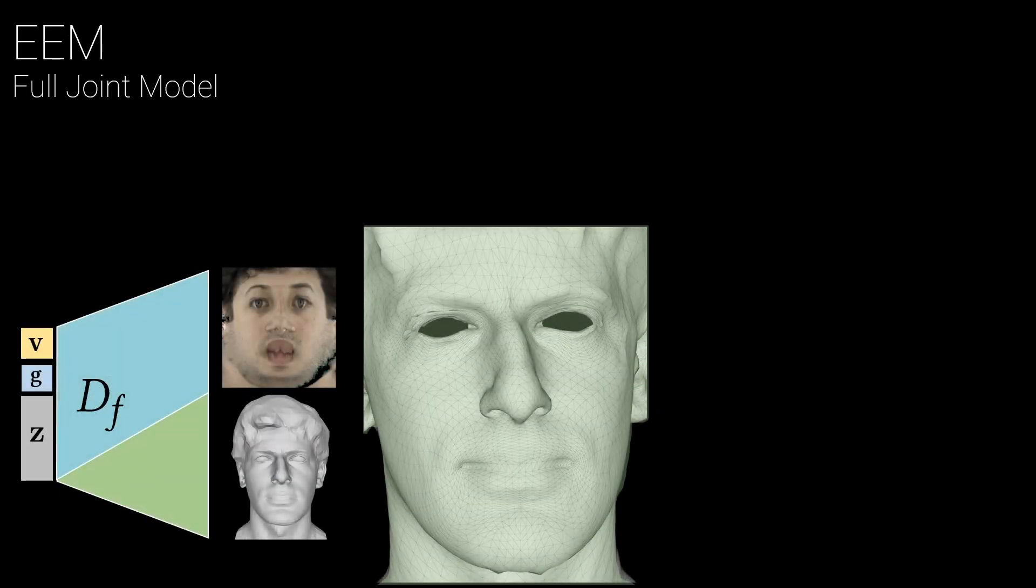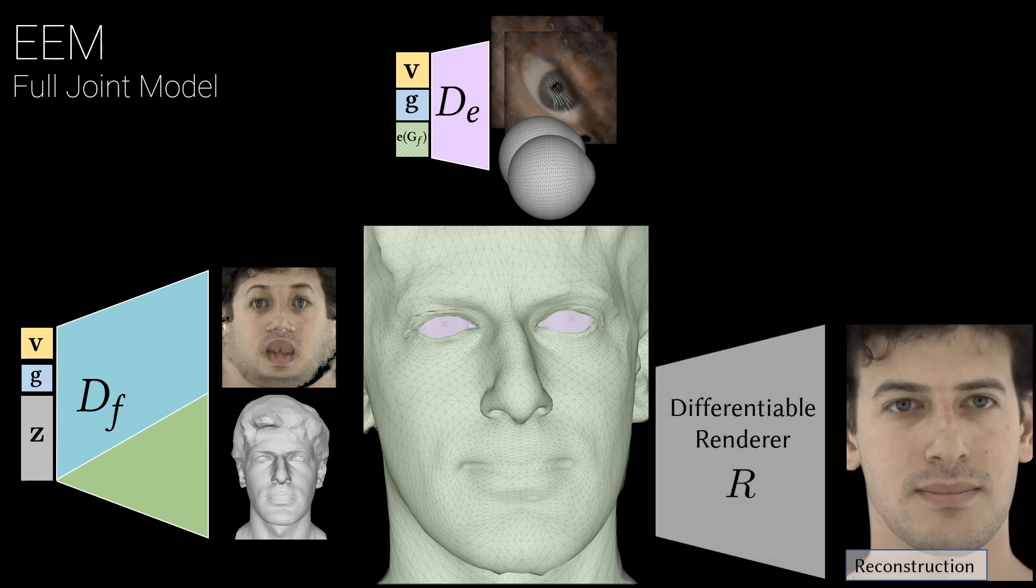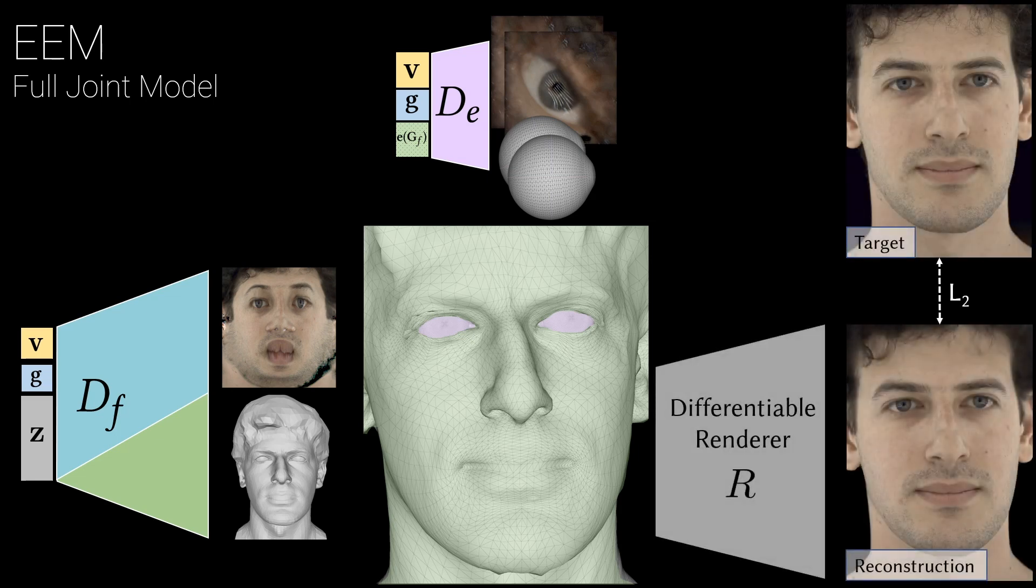To train our joint model, we first decode face geometry and texture using a deep appearance model with gaze control and independent left and right eye control. We remove the triangles that cover the eyes, rotate our eyeball geometry to match the gaze input, and place them inside the face. We then decode a texture for the eyeballs and render the entire set of meshes differentially, optimizing the model parameters to match captured images.